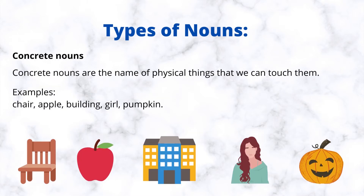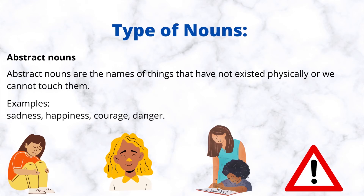Concrete nouns are the name of physical things that we can touch them. Examples: chair, apple, building, girl, pumpkin. Abstract nouns are the names of things that have not existed physically or we cannot touch them. Examples: sadness, happiness, courage, danger.